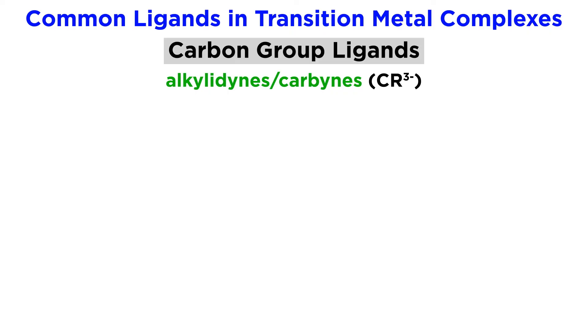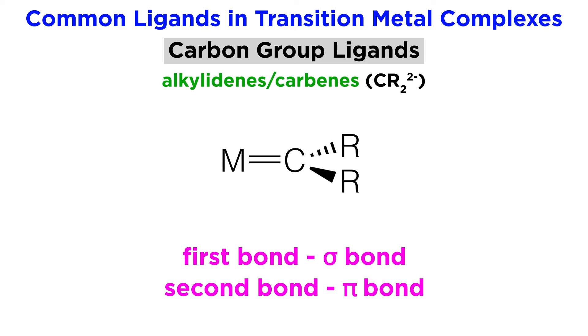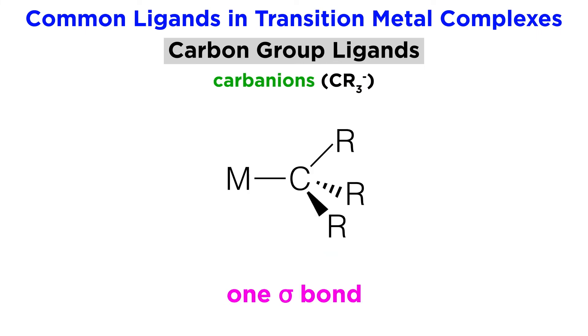Continuing to ligands from the carbon group, first we have alkylidynes, or CR3-. This will be similar to the nitride, where we get a sigma bond as usual, and then two pi bonds between the p orbitals on carbon and the dxz and dyz orbitals on the metal. Then alkylidenes, or CR2-, will form a sigma bond and one pi bond.